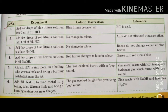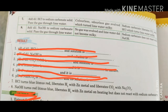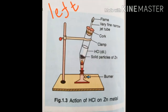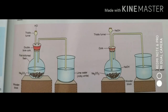For the observation table, you will only write the experiment column now. The color, observation, and inference columns — leave those empty and we will complete them at school during the practical. After the observation table, write the result. Skip the first six points; only write points seven and eight, renumbered as first and second result. Skip precautions. Diagrams should be drawn on the left side of your record notebook — one or two diagrams per page is your choice.